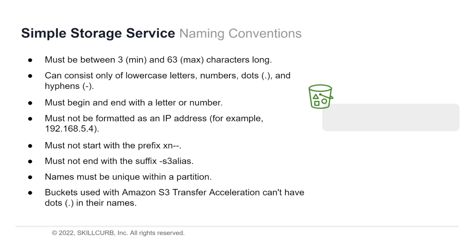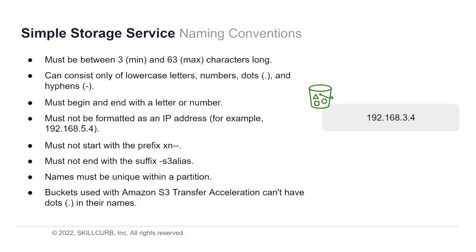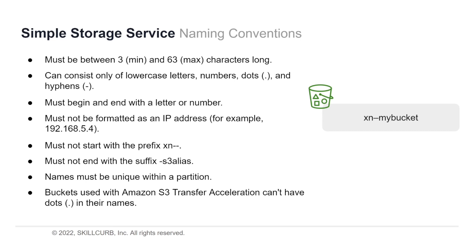The third naming convention is that your name must begin and end with a letter or a number. For example, a bucket called '/1.my-s3' would not work because it starts with a forward slash. The next convention is that your S3 bucket must not be formatted as an IP address — for example, '192.168.3.4' is not acceptable. Also, your name must not start with the prefix 'xn' — so 'xn-my-bucket' would be denied.